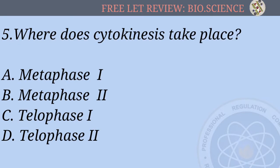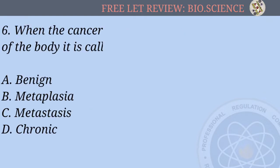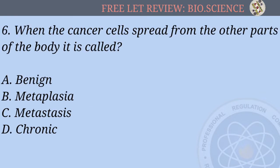Question 5: Where does cytokinesis take place? A) Metaphase 1, B) Metaphase 2, C) Telophase 1, D) Telophase 2. Question 6: When cancer cells spread to other parts of the body, it is called: A) Benign, B) Metaplasia, C) Metastasis, D) Chronic.